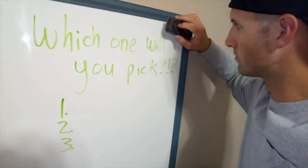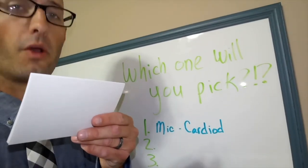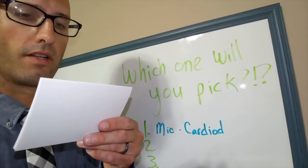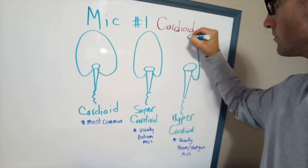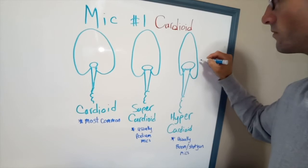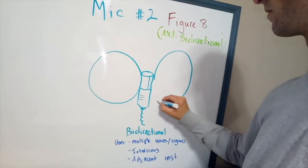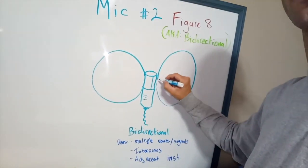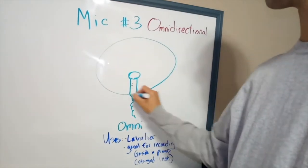Their pickup patterns are vastly different. Mike number one likes to work in the cardioid pattern — it works wonders, though sometimes he can be a little narrow-minded. Mike number two works in completely opposite directions, never in the middle. Mike number three has learned that signal can come from any direction.